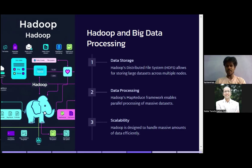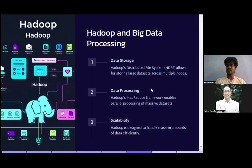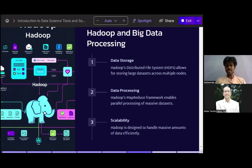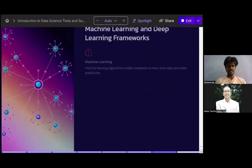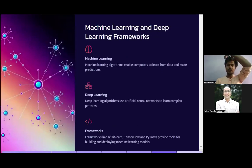The elephant is a symbolic representation of a big database — that's a great example of data visualization itself, making things visually understandable. Visualizations should be easy to understand for a simple person. Moving on to machine learning and deep learning frameworks — machine learning algorithms enable computers to learn from data and make predictions.